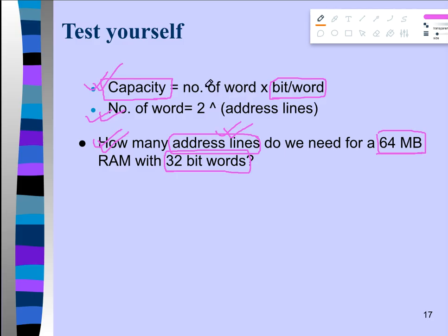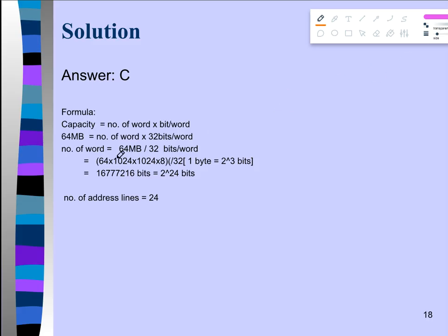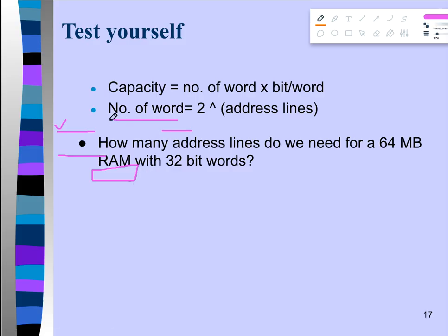Both formulas will be used to solve this problem. First, apply the formula: capacity equals number of words × bits per word. Since capacity and bits per word are given, calculate the number of words — keeping track of units in bits. Once you have the number of words, substitute into the second formula: number of words equals 2 to the power of address lines, and solve for the address lines.